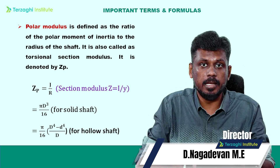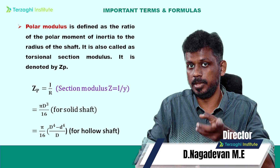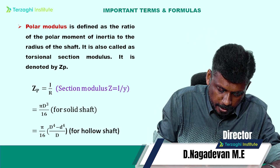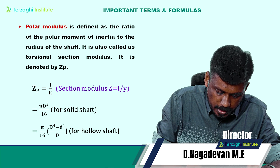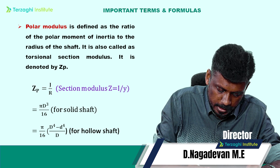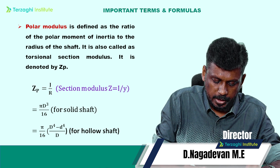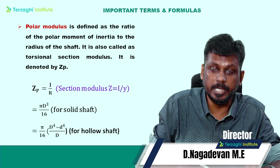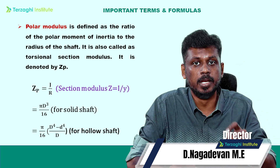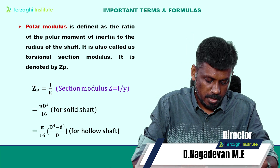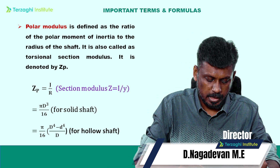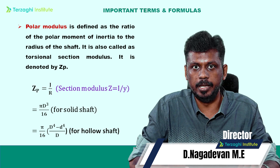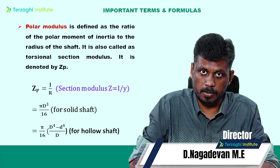For a solid shaft, polar modulus equals πD³/16. For a hollow shaft, polar modulus equals π/16 × (D⁴ minus d⁴) divided by D. This is the polar modulus — this is one important question.